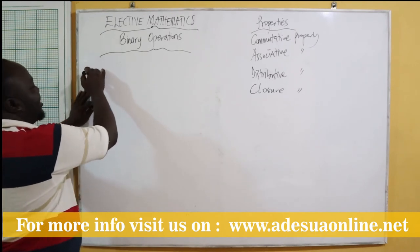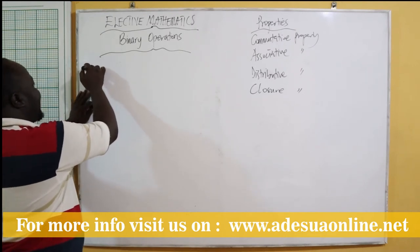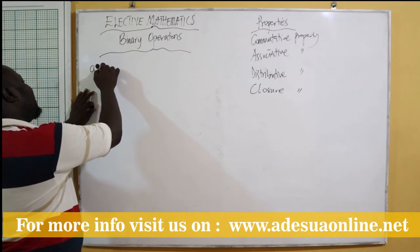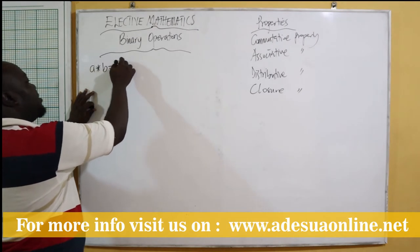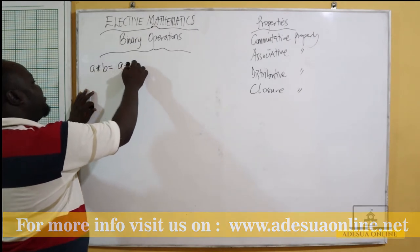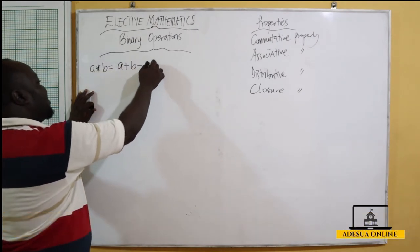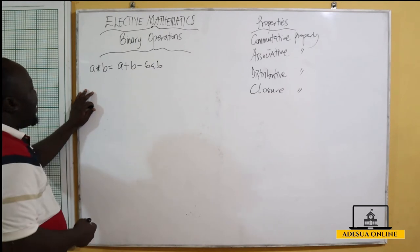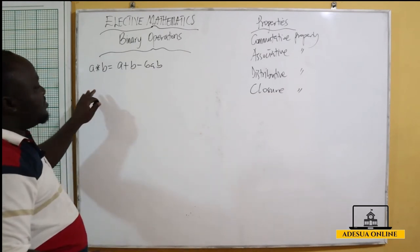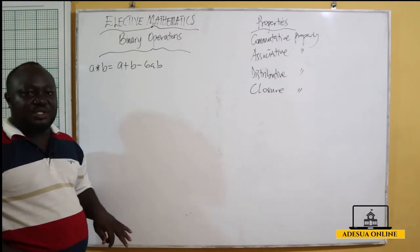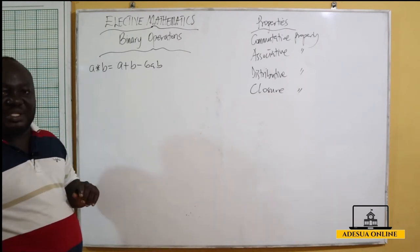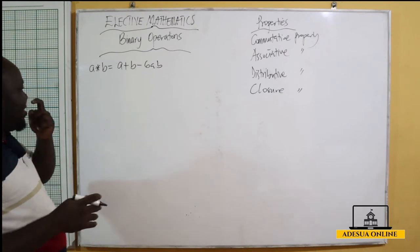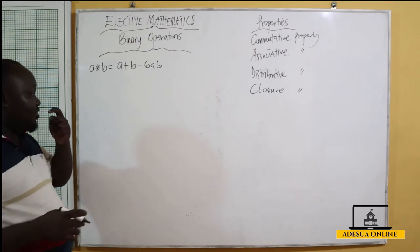Suppose a binary operation is defined on a set R by: a★b = a + b − 6ab. We are asked to show whether or not the operation star is commutative.